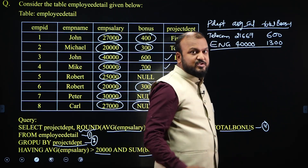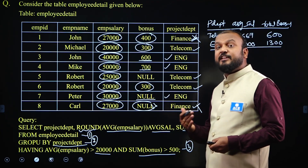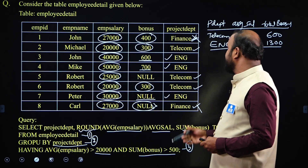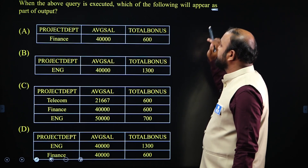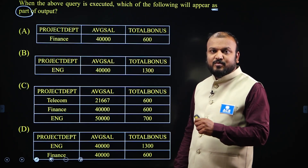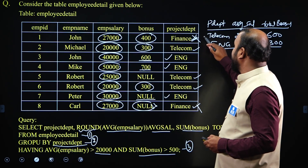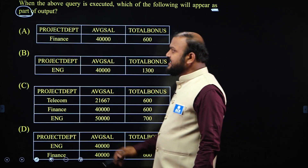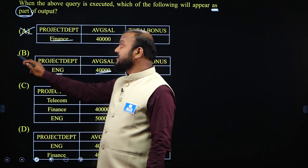This is going to be the output. You have to evaluate the query according to the order of evaluation — if you know the order, evaluating the query becomes very easy. The question asks: when the above query is executed, which of the following will appear as part of the output? The output contains telecom and ENG departments. ENG has average salary 40,000 and total bonus 1,300 — so B is the right answer, as it matches part of the output.